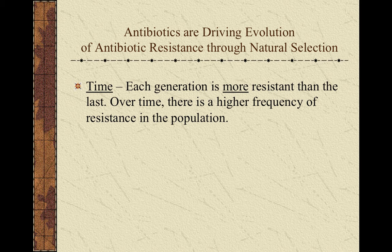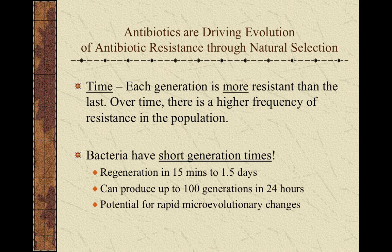It does take time in the form of multiple generations to select for antibiotic resistance, because with each generation the strongest survive, have offspring, and therefore the population has a higher and higher frequency of resistance genes that are more and more effective. However, in bacteria this can take a short amount of time overall, because bacteria have such short generation times — they can reproduce in a very short period of time and produce many many generations in a relatively short time for humans. This enables them to evolve very quickly, with a higher and higher proportion of bacteria having the trait being selected for.